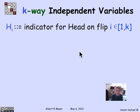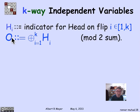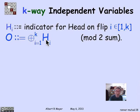We can rephrase a previous example in terms of indicator variables. Let H_i be the indicator variable for a head on flip i, where i ranges from 1 through K. The notion that there's an odd number of heads O is simply the mod 2 sum of the H_i's. Events can be defined nicely by doing arithmetic operations on the values of indicator variables. So O equals the mod 2 sum of H_i from 1 to K.